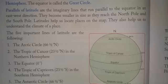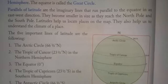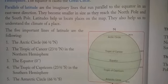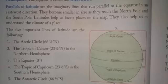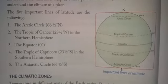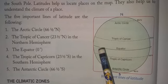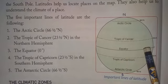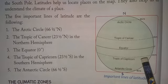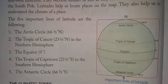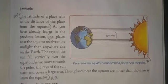The parallels of latitude become smaller in size as they reach the North Pole and the South Pole, as you can see in the picture. Latitude helps us to locate places on the map and to understand the climate of a place. Some important lines of latitude are: the Arctic Circle, the Tropic of Cancer in the Northern Hemisphere, the Equator, the Tropic of Capricorn in the Southern Hemisphere, and the Antarctic Circle.